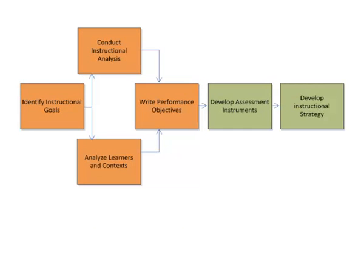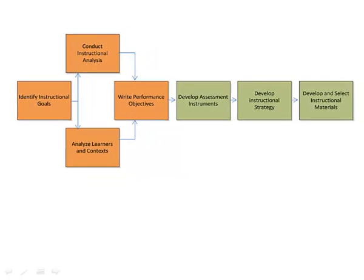The next step is to develop your instructional strategy — similar to the design phase, you plan out how to present new content, examples, and demonstrations, how learners will interact with the materials, and how you will assess learners. Your instructional strategy should be based on instructional theory — what we know works in instruction. After developing your instructional strategy, the next step is to develop and select the instructional materials, where you actually produce the instruction based on the strategy you've created.